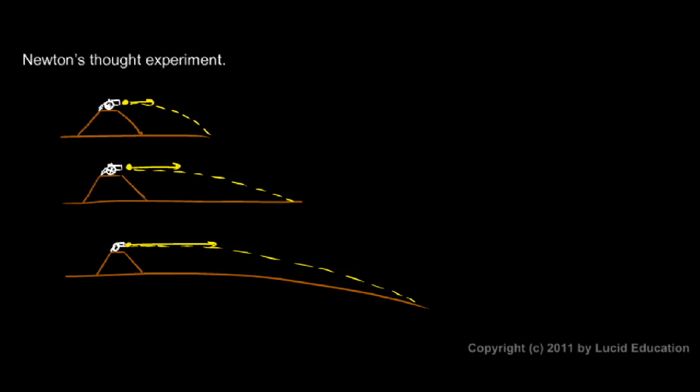Now Newton went on to think this. Imagine the Earth, and you can draw this over here fairly large. And here's our hilltop up here. And our little cannon up on the hilltop. Of course, this isn't drawn to scale. Here's the cannon.